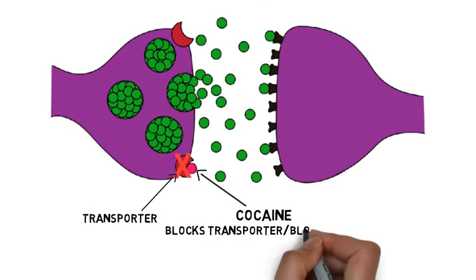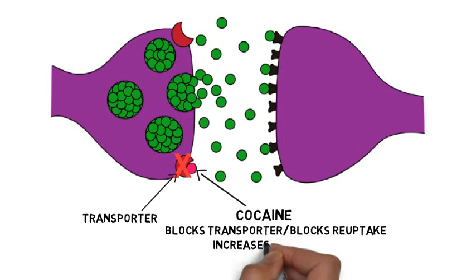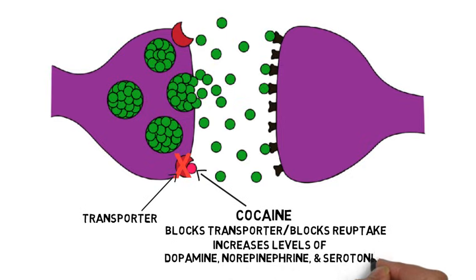By blocking monoamine transporters and inhibiting monoamine reuptake, cocaine causes levels of dopamine, norepinephrine, and serotonin to increase in the brain, enhancing the activity of these neurotransmitters at their receptors.